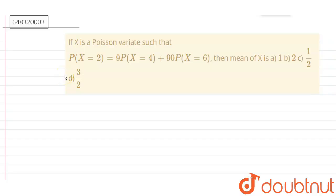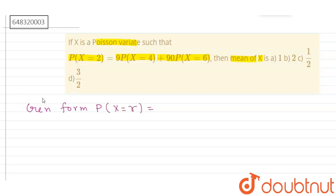So here the question is: if X is a Poisson variate such that P(X=2) equals 9·P(X=4) plus 90·P(X=6), then what is the mean of X? First we will look into the general form of P(X=r), which is e to the power minus lambda, multiplied by lambda to the power r, divided by r factorial.